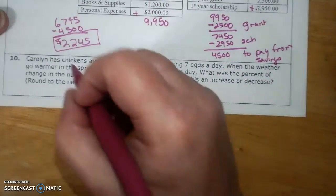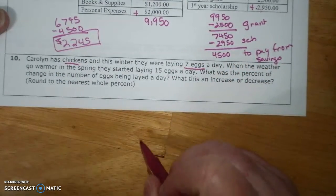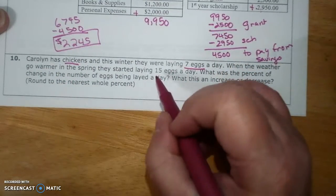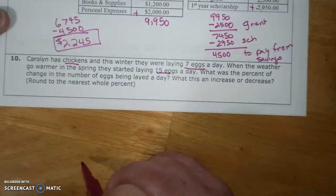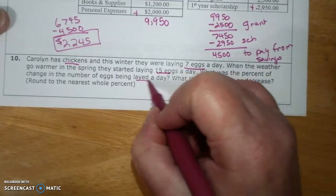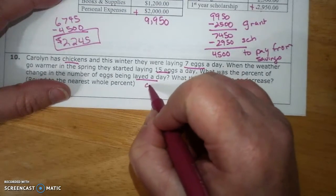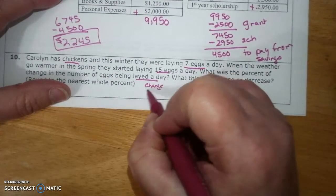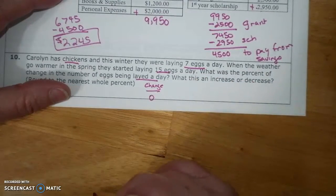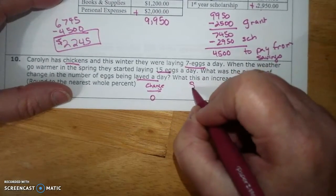Oh, we're going to a farm. Carolyn has chickens laying 7 eggs a day. When the weather goes warmer in the summer, they're laying 15 eggs a day. What was the percent of change in the number of eggs being laid a day? So my change over original, my change I went from 7 to 15, which is 8.